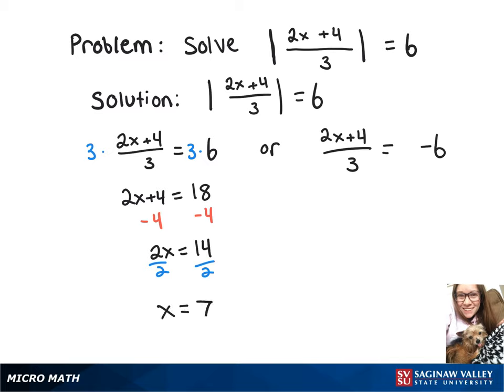Now, going back to our other equation, we're going to multiply both sides by 3. That's going to leave us with 2x plus 4 equals negative 18.